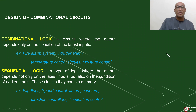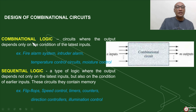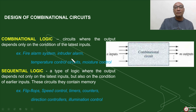What are combinational circuits? There are two logic circuits we'll be designing. This is what we call the combinational logic circuit and the sequential logic circuit. The combinational logic circuit is a circuit where the output depends only on the conditions of the latest inputs. Samples of which are fire alarm system, intruder alarm, temperature control, and moisture control. Whatever the state of your input will determine what happens with respect to our output.